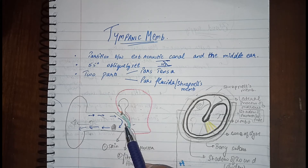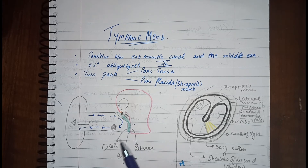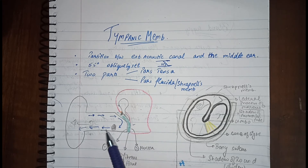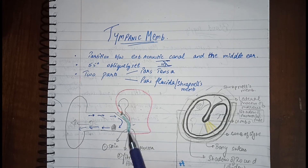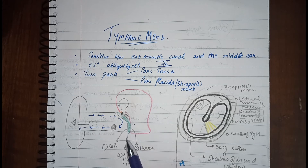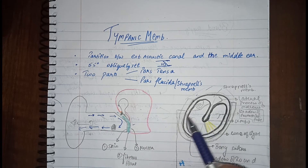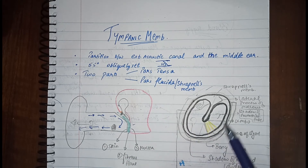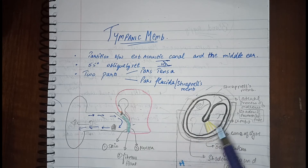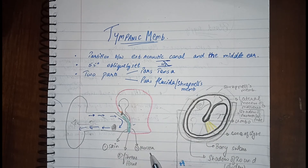The tympanic membrane is formed by three layers. The outermost is the skin, which is just a continuation of the external acoustic canal. The middle is the fibrous tissue, which has two types of fibers: the radial fibers and the circular fibers. The radial fibers move and join with the annulus tympanicus, which will be discussed later.